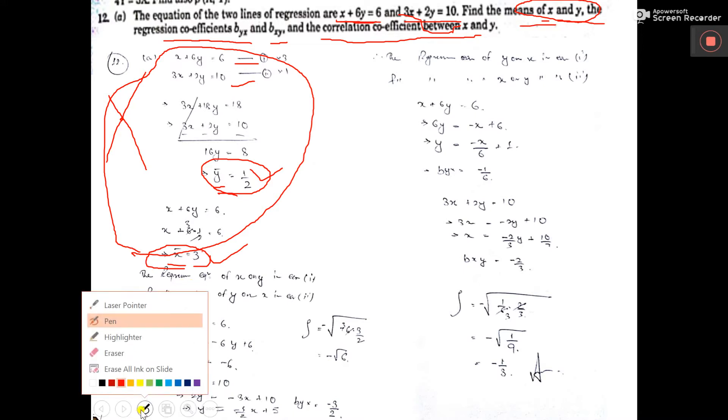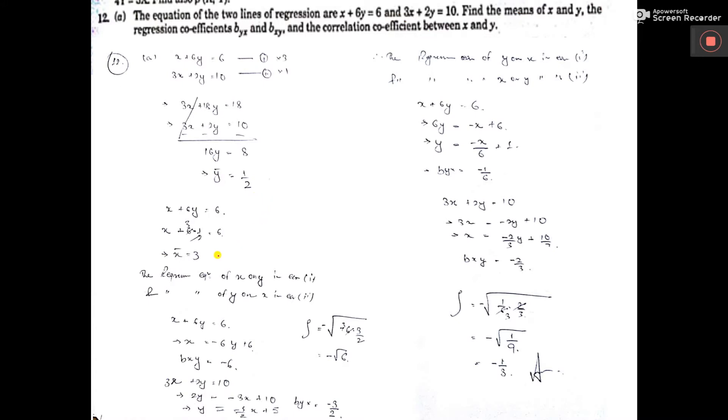Now, next part. How to do? Let the regression equation of x on y is equation one. This is regression equation of x on y. So, from this equation, you have to find x as a subject. Then, compare x equal to m times y. So, this is the slope. m means this is bxy. See, start with x, end with y. So, bxy is this.